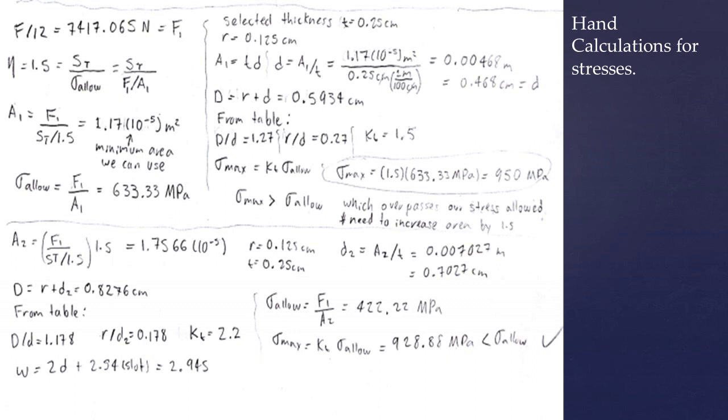And then we proceed to find the area based on the formula thickness times the diameter in order to find the diameter based on the area that we found.